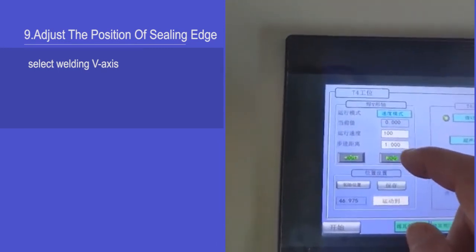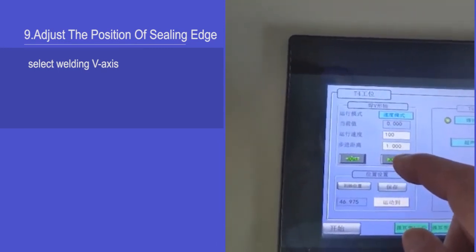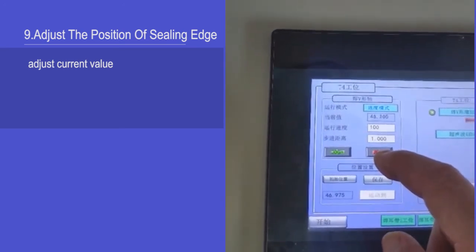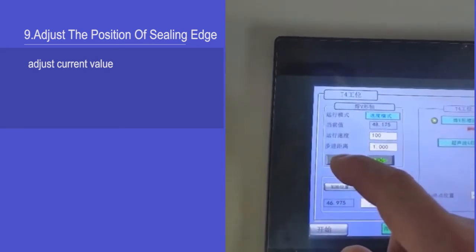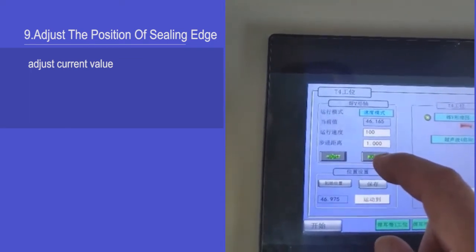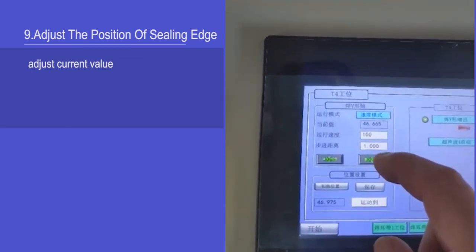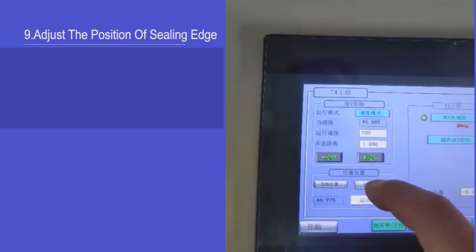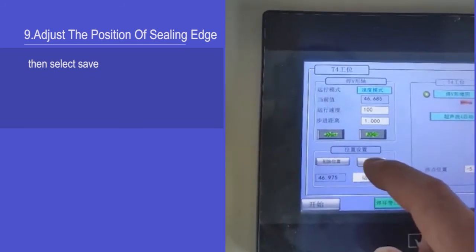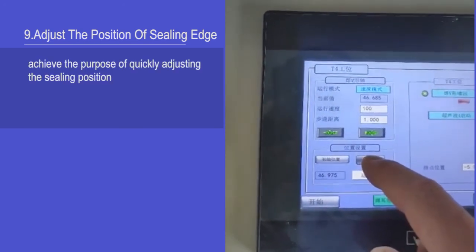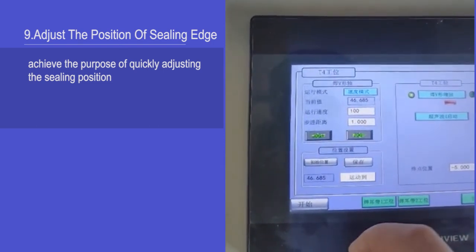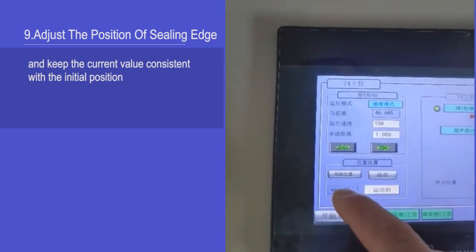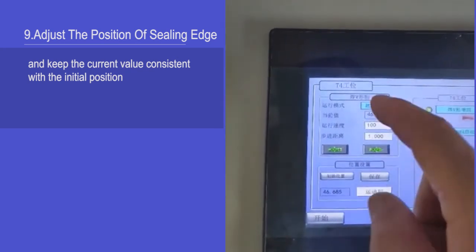Select welding V axis, adjust current value, increase value. Then select save. Achieve the purpose of quickly adjusting the ceiling position and keep the current value consistent with the initial position.